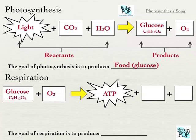So, in respiration, we have glucose and oxygen. The molecules get rearranged to form ATP, and the two waste products are carbon dioxide and water. It's almost the exact opposite of photosynthesis. Photosynthesis takes in carbon dioxide and water — respiration releases them. Photosynthesis produces glucose and oxygen — respiration starts with those things.